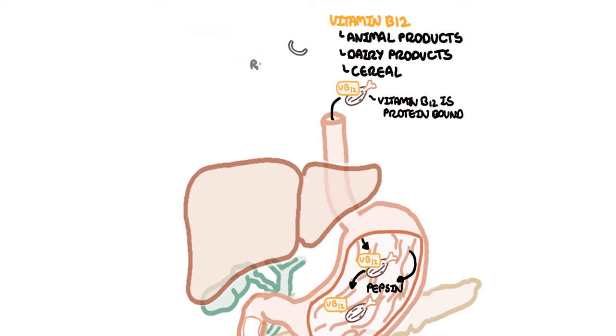During the same time when vitamin B12 is eaten, the salivary glands produce another protein called the R binder, also known as haptocorrin, which will enter the stomach and then bind to the released vitamin B12, forming the vitamin B12 R binder complex.